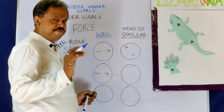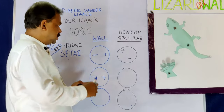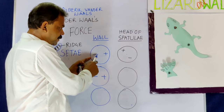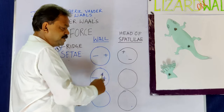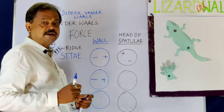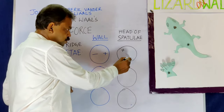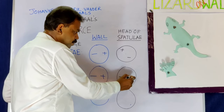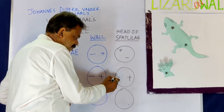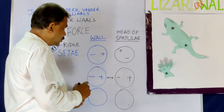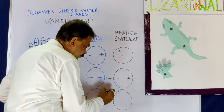Every molecule is neutral because it has both positive and negative particles. Suppose this is a wall having negative and positive particles, and this is the head of the spatula — it also has positive and negative charges. When it comes in contact with the wall, the negative side comes close to the positive side and a force of attraction is created. That is called the van der Waals force.